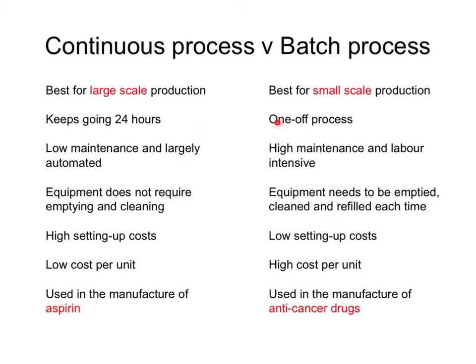The equipment in continuous process doesn't require emptying and cleaning — it just runs all the time — whereas in batch process there's a lot of downtime where the equipment is emptied, cleaned, refilled and so on. Batch process has low setting-up costs but is more expensive to run per unit, whereas continuous process has huge setup costs but a low cost per unit. Continuous process is used for some drugs — mainly industrial chemicals but also drugs like aspirin, paracetamol, ibuprofen, and statins — whereas batch process is used for more specialised drugs such as anti-cancer drugs.